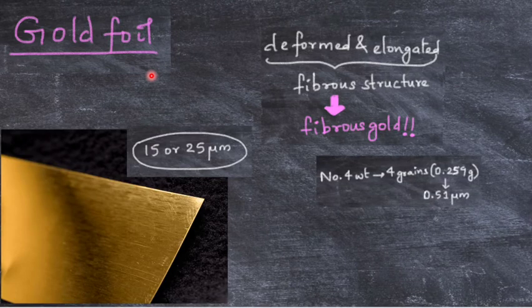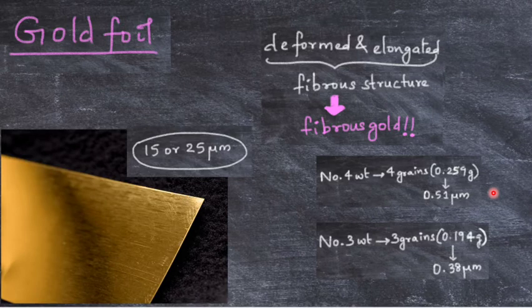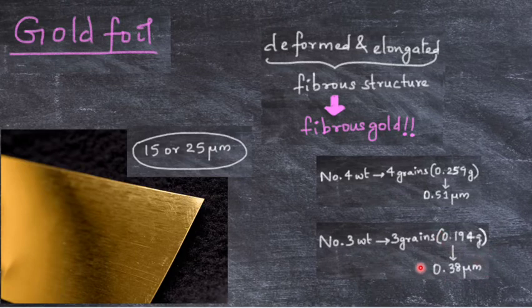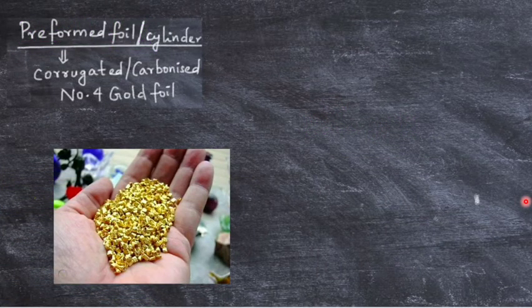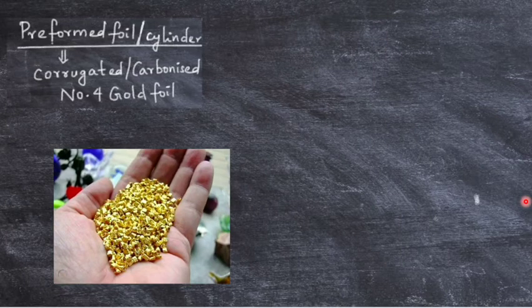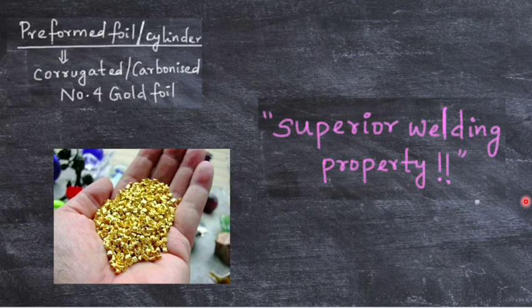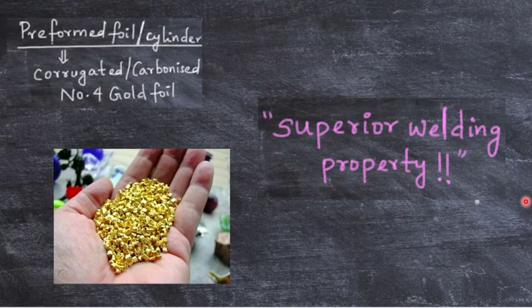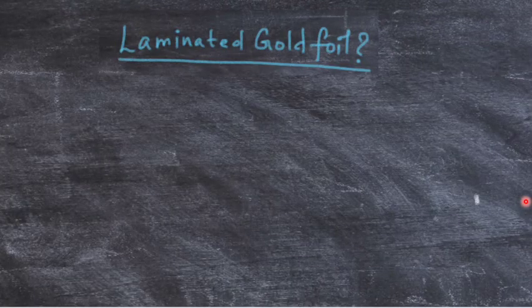The sheets are available as number 4 and number 3. Number 4 is 0.259 grams weight and 0.51 microgram thickness. Number 3 is smaller: 0.194 grams weight and 0.38 microgram thickness. The preformed foil or cylinder is rolled and cut into desired size. The properties can be increased by corrugating or carbonizing a number 4 gold foil. The foil is sandwiched between two paper sheets and ignited in a closed chamber. This is said to confer the gold better properties.